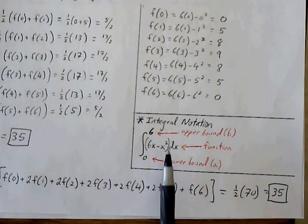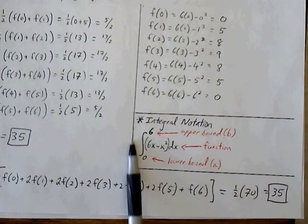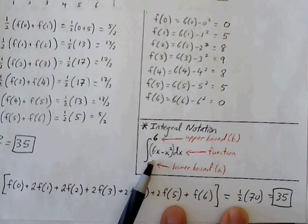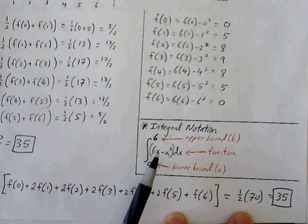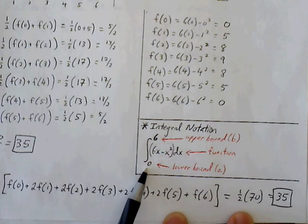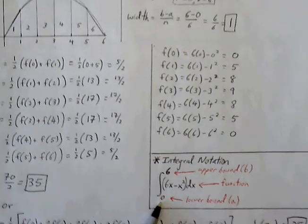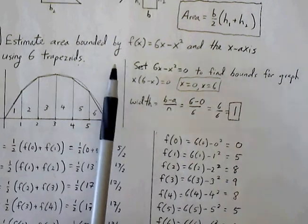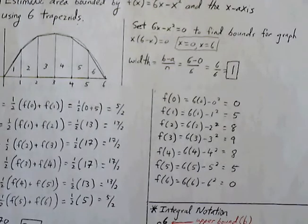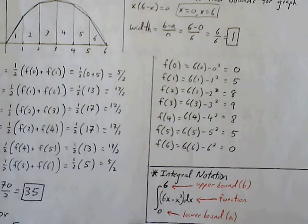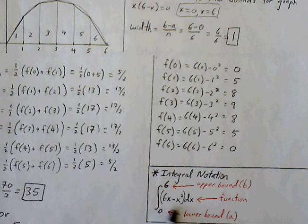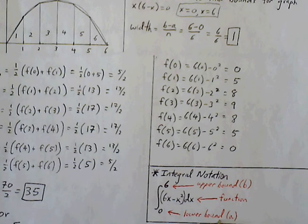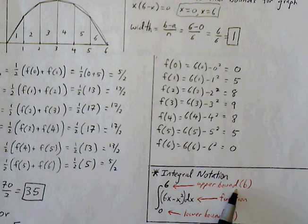In your homework, you're going to see integral notation, and it's a problem that looks like this, where it says the integral of 6x minus x squared between 0 and 6. This is saying the same thing as estimating the area for our function between the intervals from 0 to 6. So the function that we're dealing with is 6x minus x squared, and that's going to be placed here next to the integral sign. And then the lower value that you see is the lower bound, that's the A value. And then the 6 here is where the upper bound is, or the B value.